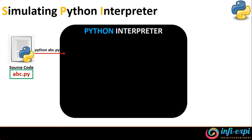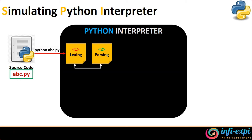Once we hand over the source code into the Python interpreter, the very first step that happens is Lexing. Once you offer the Python file into the interpreter, the first stage is the Lexing stage, which does its process with the given abc.py. What Lexing does is it creates a token for the given Python code. That token is handed over to a parser where parsing takes place, and once parsing is done, it is handed over to a process called compiling — that's the third stage.